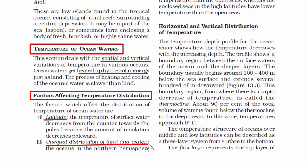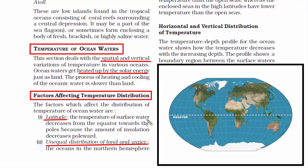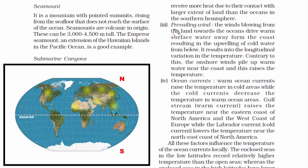The second factor affecting temperature distribution of ocean water is unequal distribution of land and water. Land heats faster than water and also loses heat faster than water. The Northern Hemisphere has more landmass compared to the Southern Hemisphere, so oceans in the Northern Hemisphere have contact with a larger extent of land and therefore receive more heat.